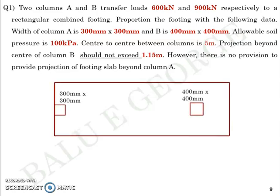The width of column A is 30 cm by 30 cm in plan and B is 40 by 40 cm. Allowable soil pressure is given as 100 kPa and the center to center distance between the columns is 5 meters. A projection beyond the center of the column B, which is a heavier column, should not exceed 1.15 meters. However, there is no projection provision beyond column A. Just go through the question, read it again, pause your video and try to see what the real case is.